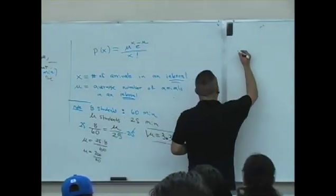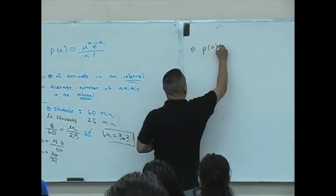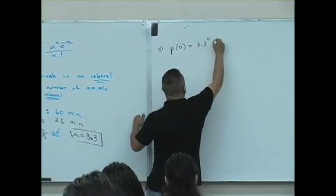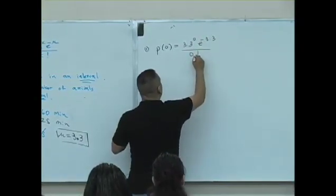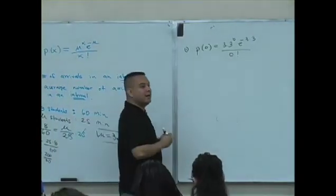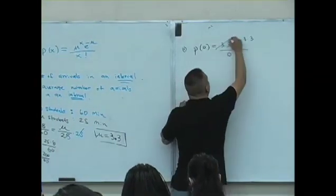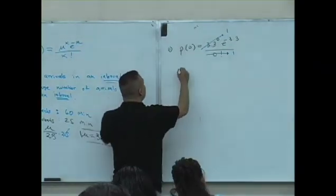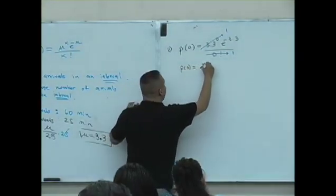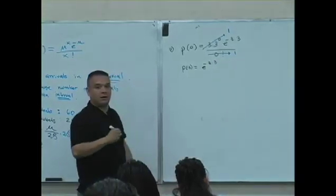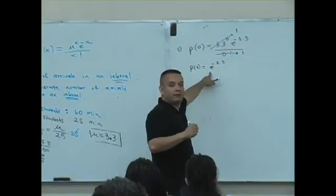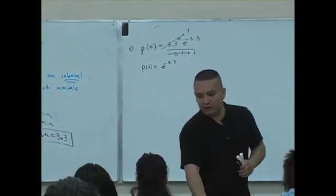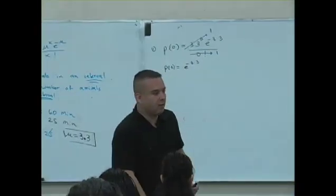All right, so now, first question. The probability that x is zero, no students arrive, will be mu is 3.3 to the zero power, e to the minus 3.3 over zero factorial. Now, this happens every single time in the sense that any base to the zero power is the value one. Zero factorial is the value one. So that p of zero is e to the minus 3.3. e is that exponential number. What is e to the minus 3.3?